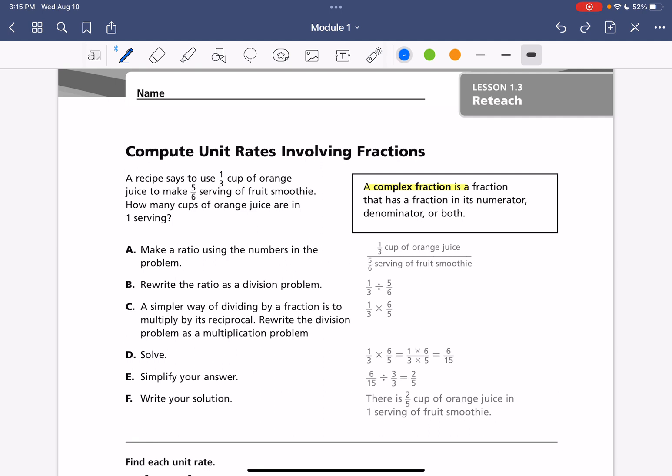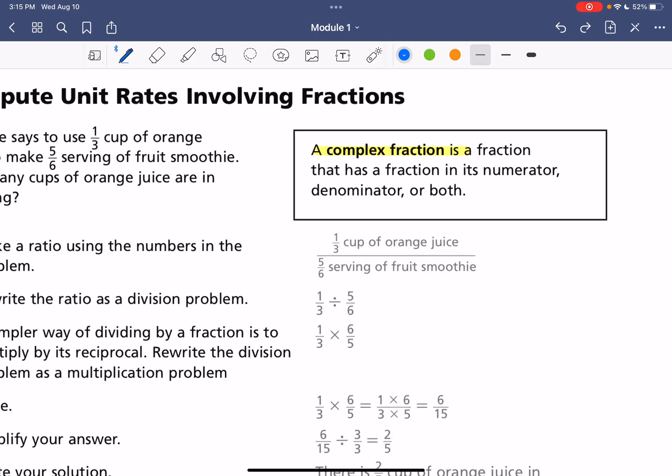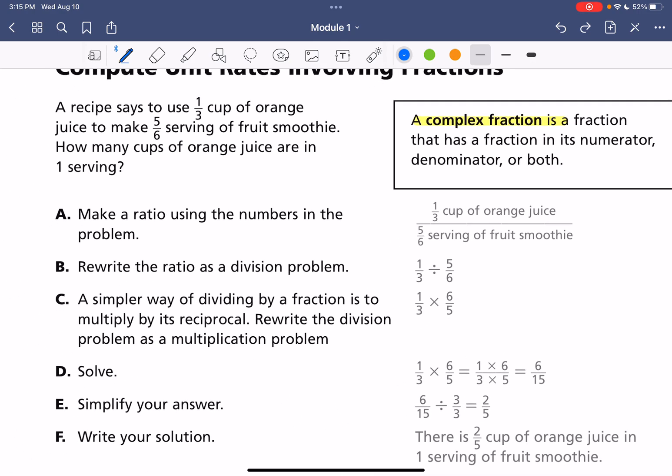So our first step here is to make a ratio. It's really important to make sure that you have your units labeled so you know what you are finding. And for unit rate, we want to always get to that per one, that one serving, like miles per one hour. Here we want to get to per one serving.